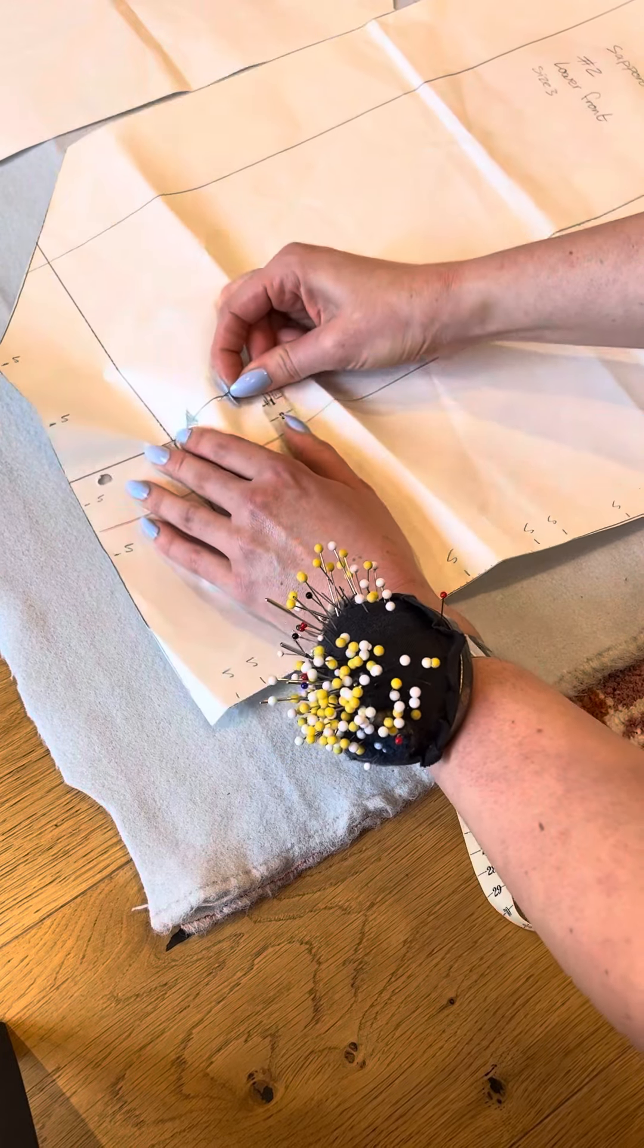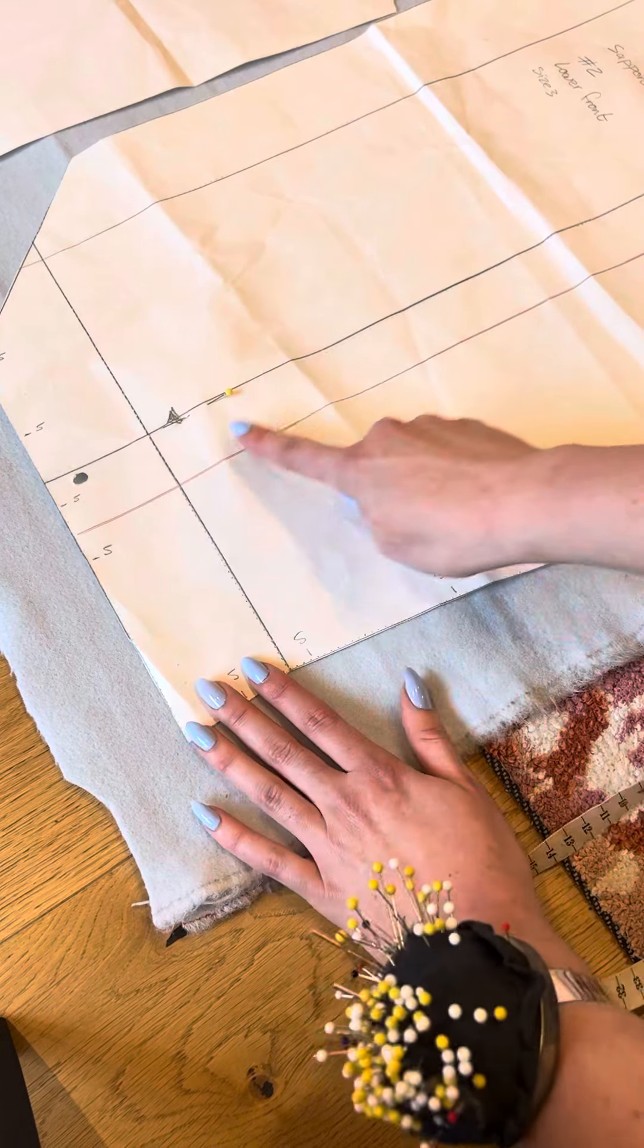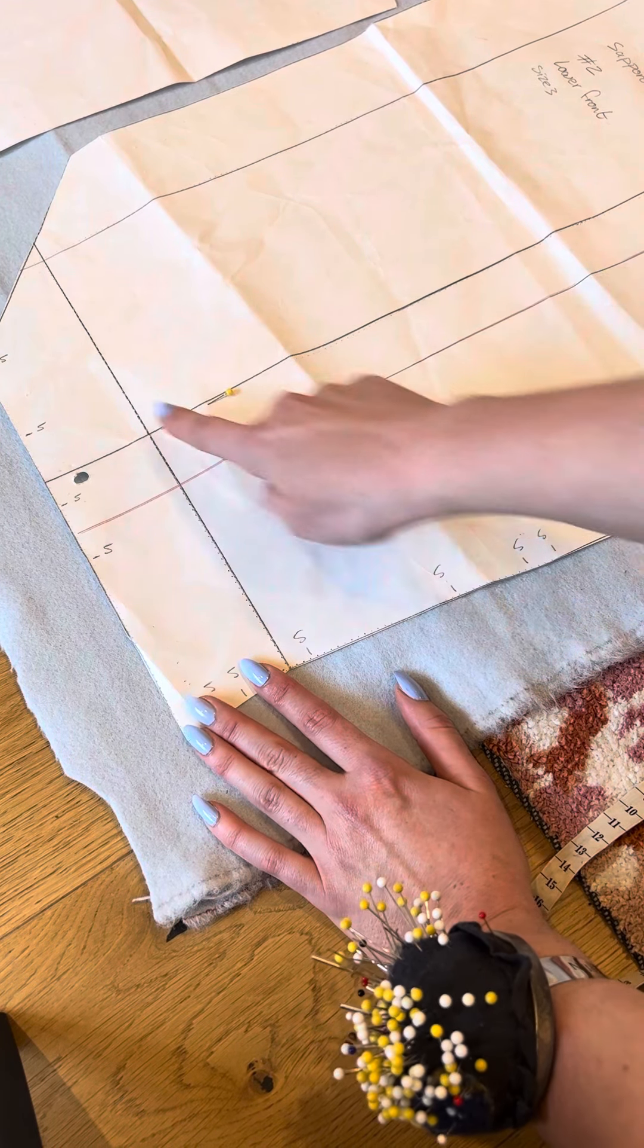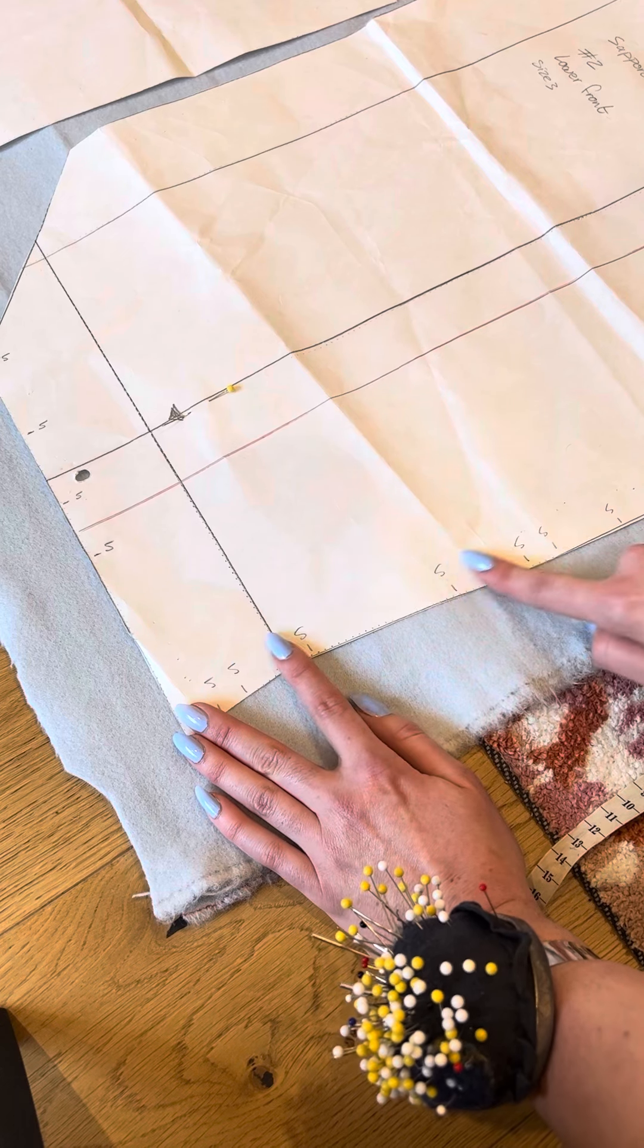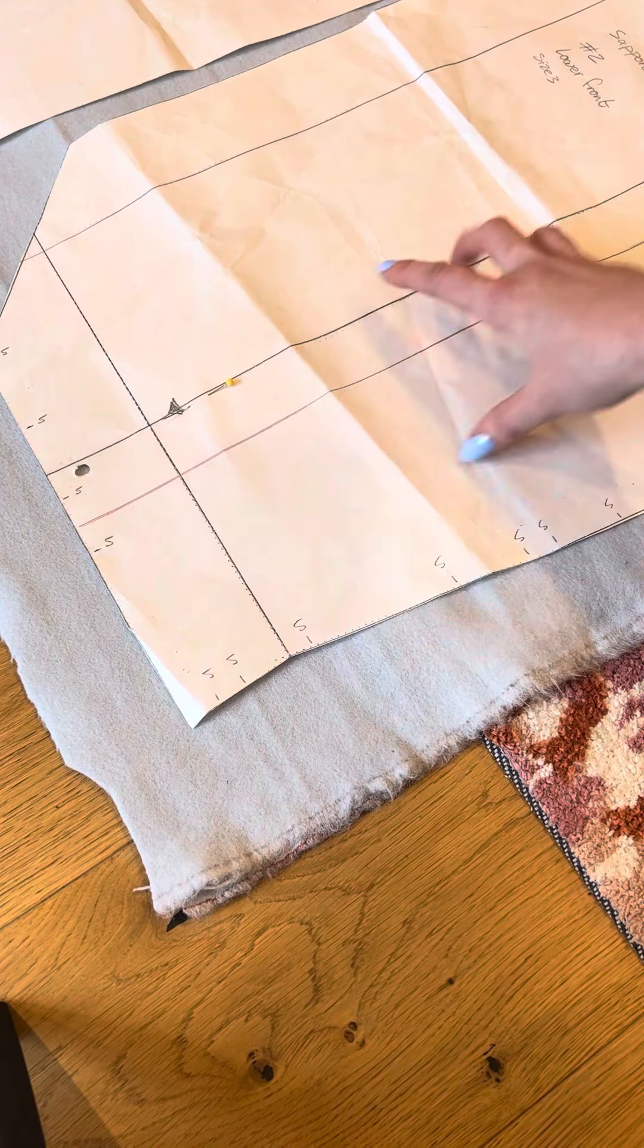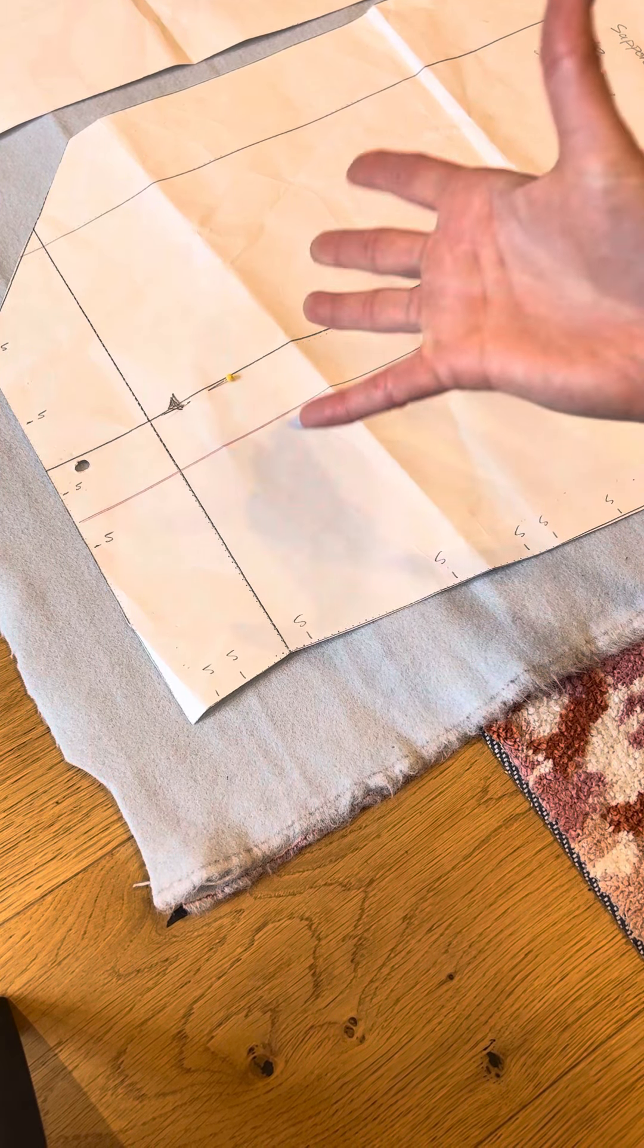I'm just going to loosely pin that there, and then what I would do is go along this whole grain line pinning, and then pin around the exterior of the pattern piece. This will make sure that our garment is hanging nicely and will look beautiful when we finish.